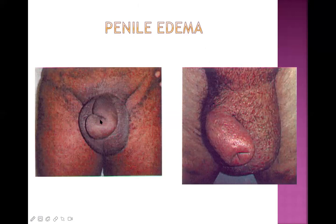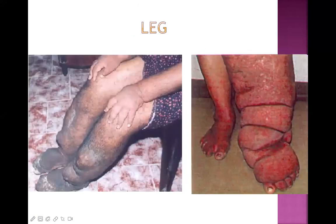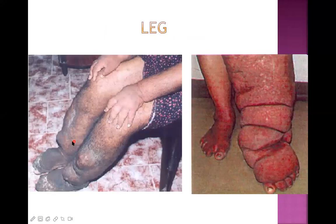Other pictures show penile edema along with scrotal edema, with the penis deformed due to excessive swelling and visible hydrocele. The leg pictures show a very neglected and chronic phase of elephantiasis - extensive fissuring, fibrosis, and scarring of the leg almost like an elephant leg. There is also very thick, fibrotic skin with marked swelling.